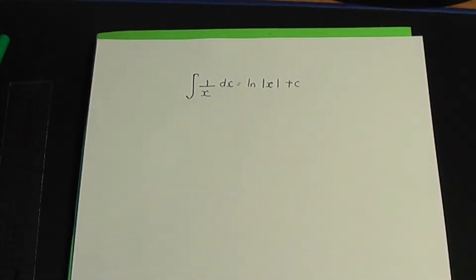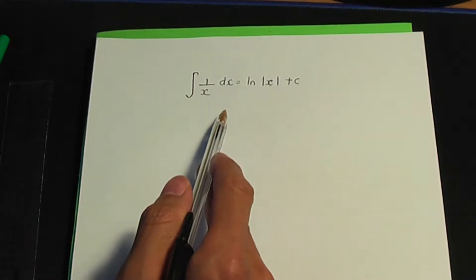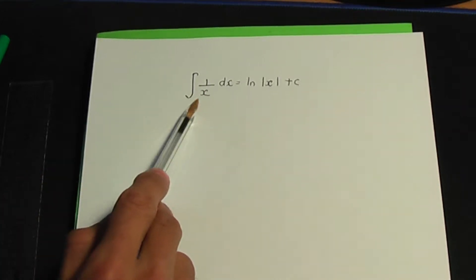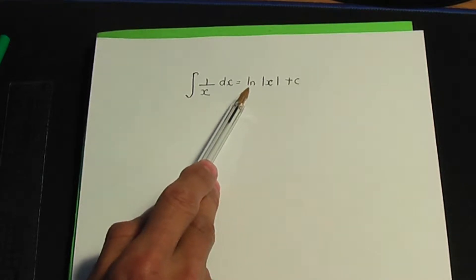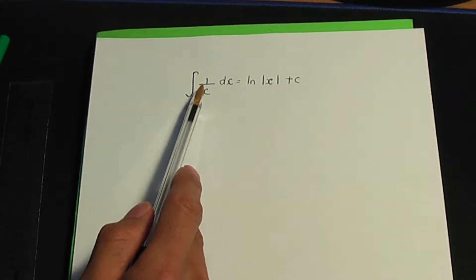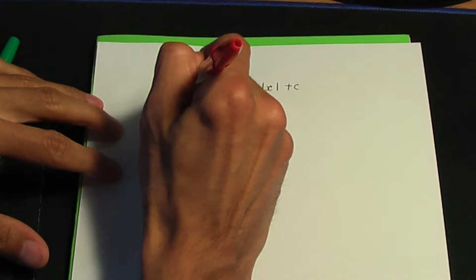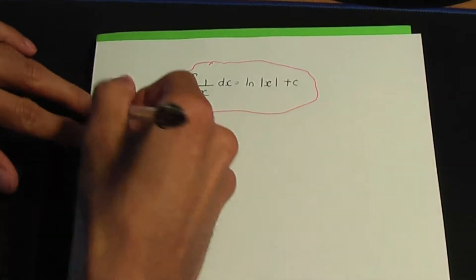In this video I'm going to show you how to use this standard result to integrate a number of examples. Let's go through this result: if you integrate 1 over x with respect to x, the result is ln the modulus of x plus c. Let me highlight this result and show you how to apply it to solve some integration problems.